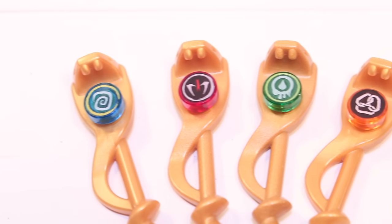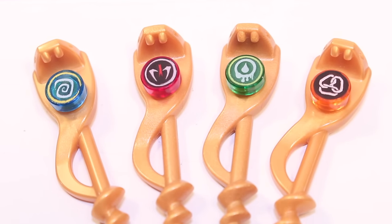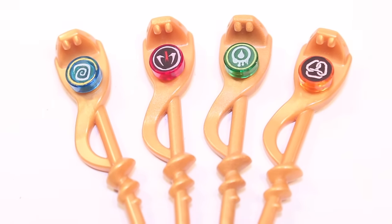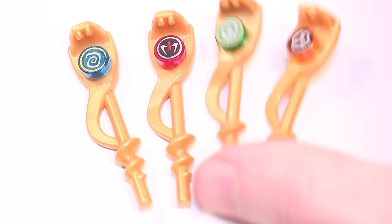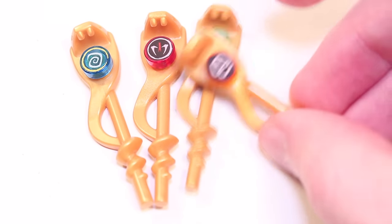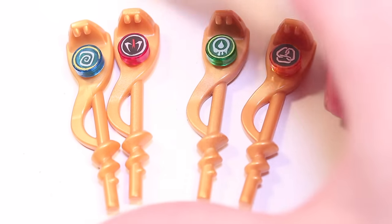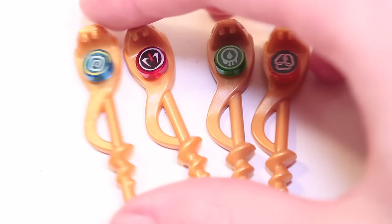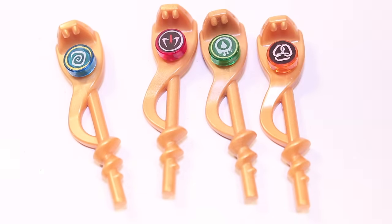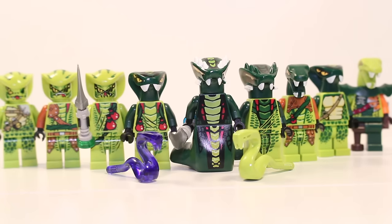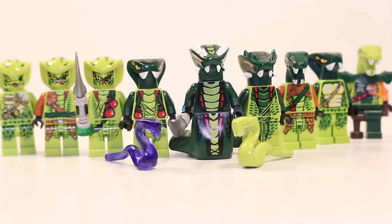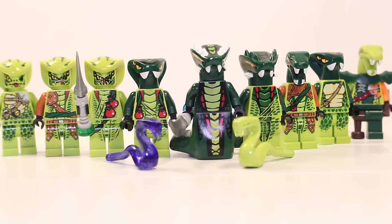Here's all four Serpentine tribe staffs, with the Hypnobrai, Fangpire, Venomari and Constrictai. The latter two didn't come in sets with their generals, which is why I've put them all together here. As the second set of collectibles in the world of Ninjago, I think these were pretty fun. The staff is the same on each one, but the anti-venom pieces have some awesome looking designs. The lime green Venomari contain, in my opinion, many of the best minifigures in this video. And it's also the biggest Serpentine tribe too.